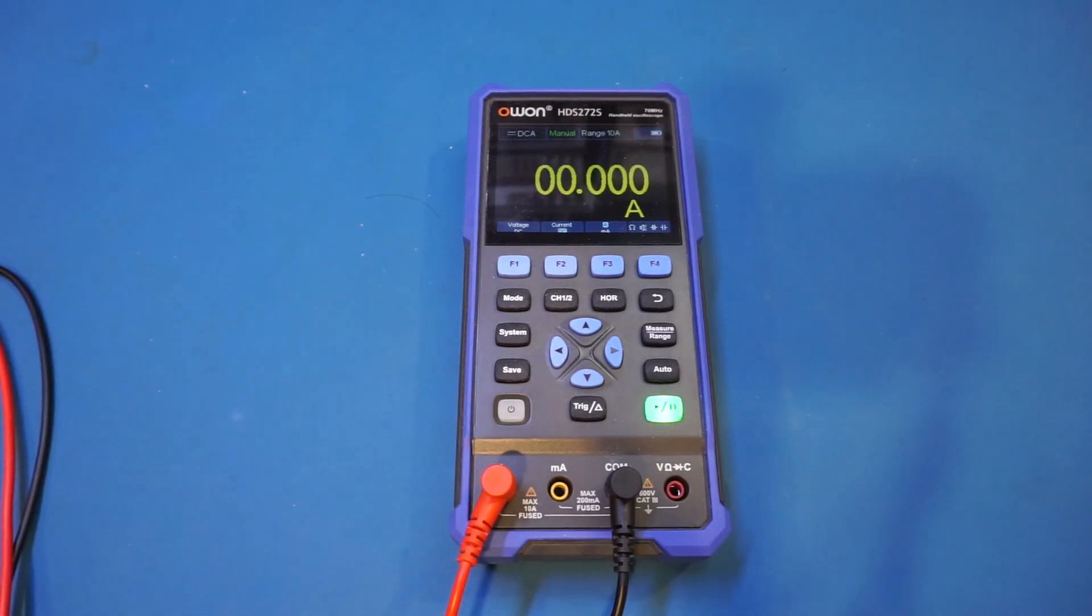So you can see that the multimeter section in this HDS200 series is definitely well designed. And because of the multimeter section is essentially the same across the entire HDS200 lineup, that means that HDS20102S and HDS20202S, they all have essentially the same behavior as what we just demonstrated here.